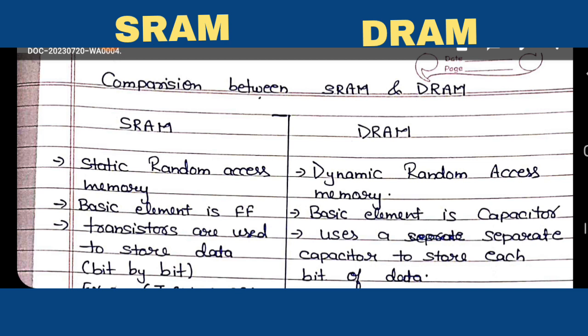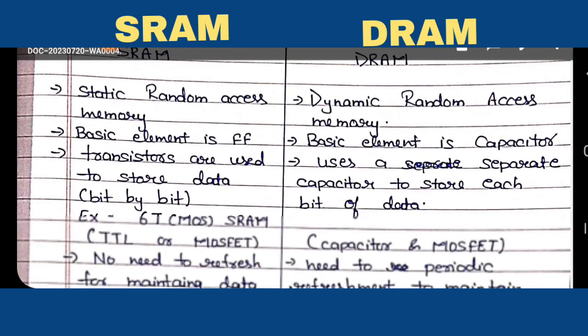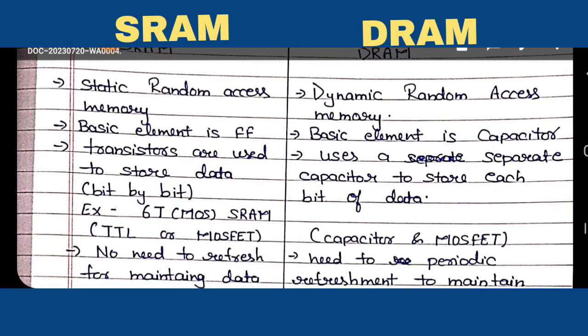The first difference is the basic element. For static RAM, the basic element is a flip-flop, while for dynamic RAM the basic element is a capacitor. A flip-flop is a one-bit storage device, and in the case of DRAM, capacitors store bits in the form of charges.